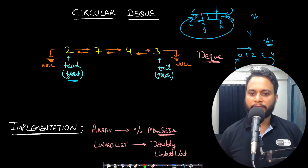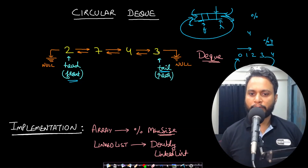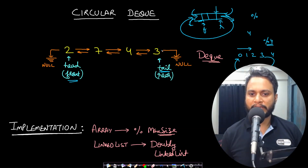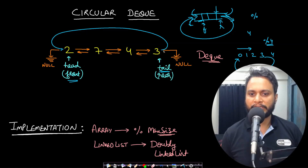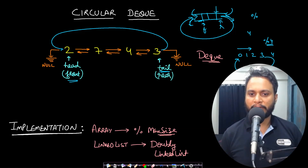Whenever we move to the next pointer of the tail, we make the next pointer of node 3 point to 2. Initially it was pointing to null because it was a deque; now in order to make it a circular deque, we make the next pointer of 3 point to the head.